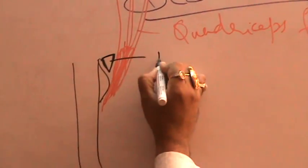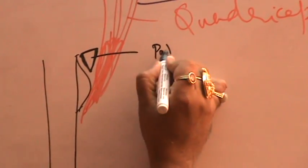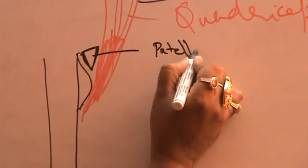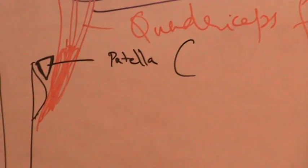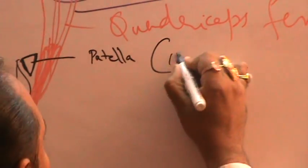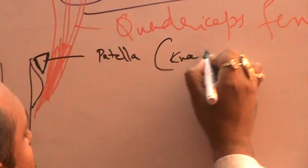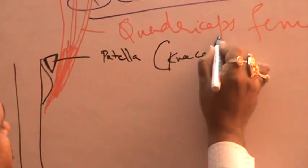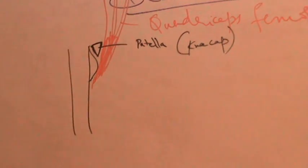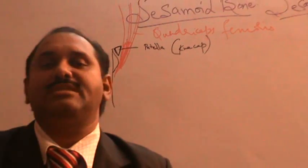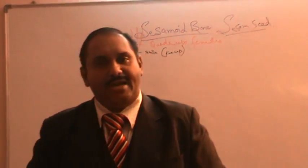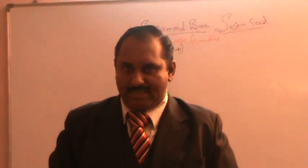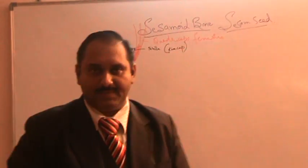This patella is also called the kneecap. The patella is the largest sesamoid bone present in the body, developing in the tendon of quadriceps femoris.